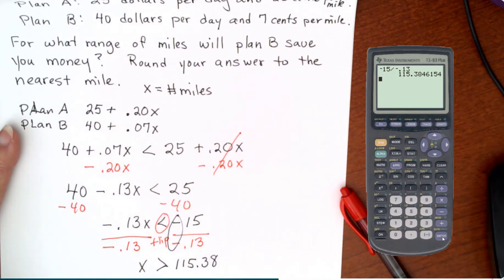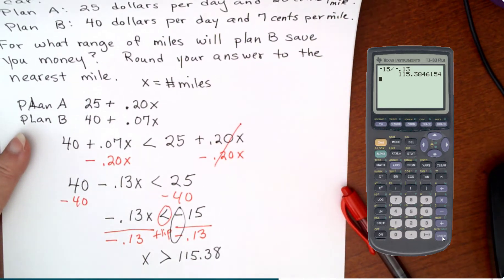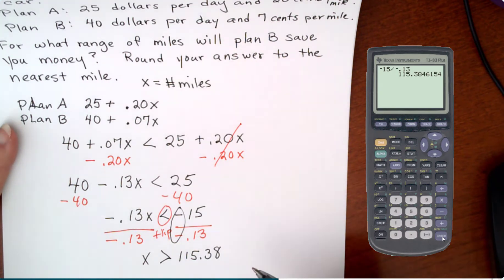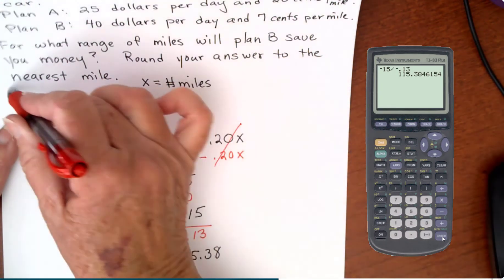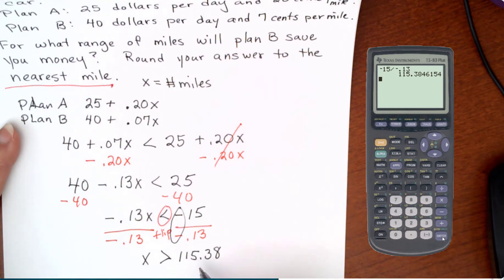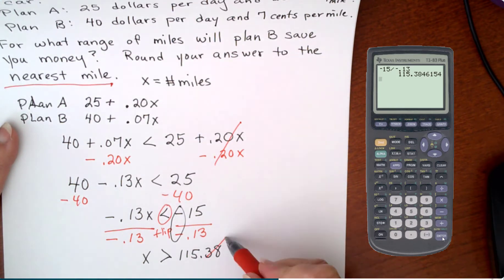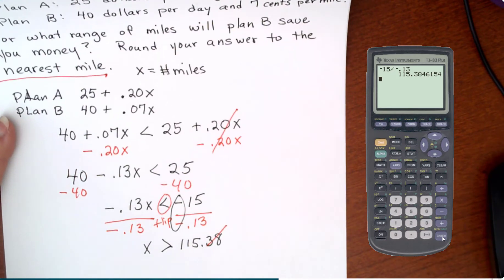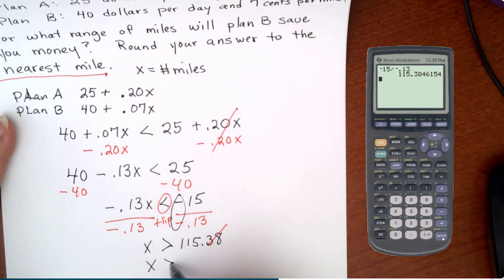And you want to make sure here that you follow the directions. It says round your answer to the nearest mile. Your mile is going to be your whole number. And so you look one digit to the right. Just one. So a 3 is not enough to push it up. So you're going to drop those off. And you will answer x is greater than 115 miles.